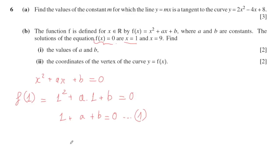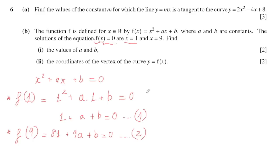I set the first equation by substituting x equals 1 into f(x): 1 squared plus a times 1 plus b equals 0, which simplifies to a plus b plus 1 equals 0. This is equation one. For equation two, I substitute x equals 2: 4 plus 2a plus b equals 0. This gives us two equations to find a and b.